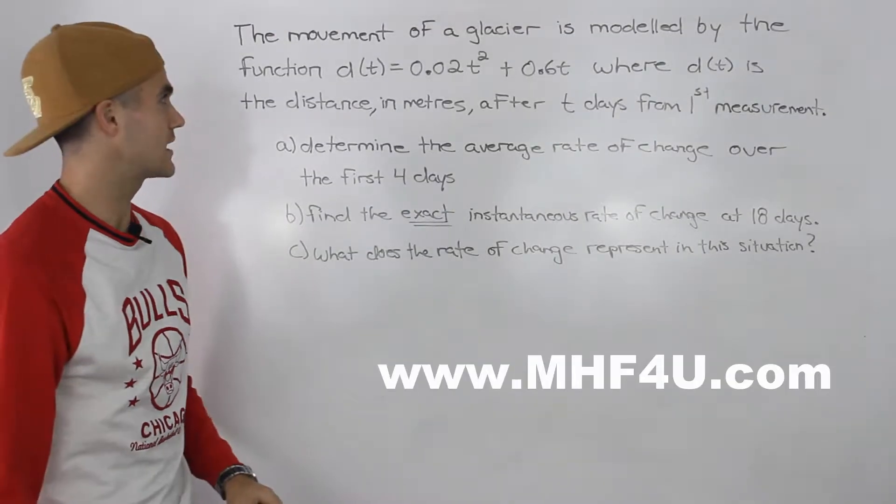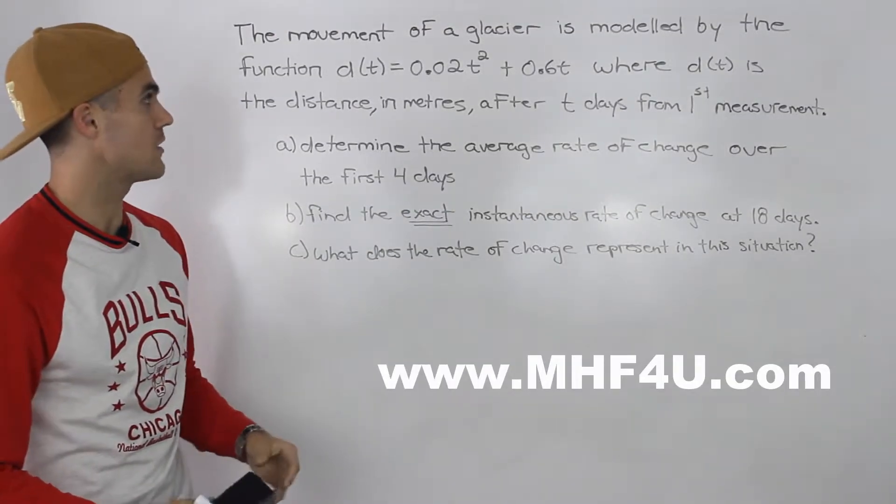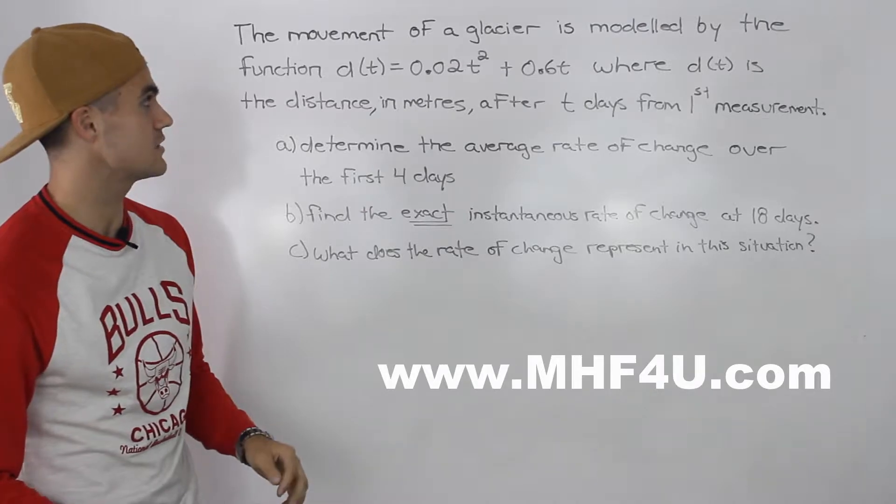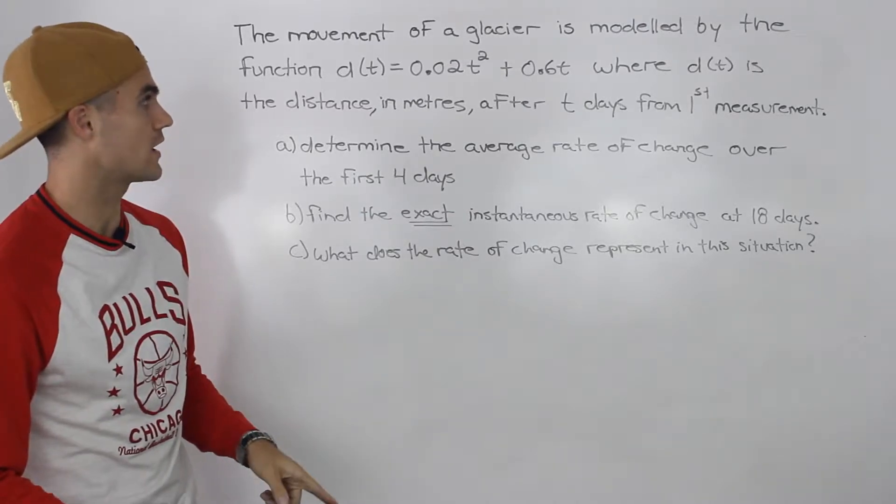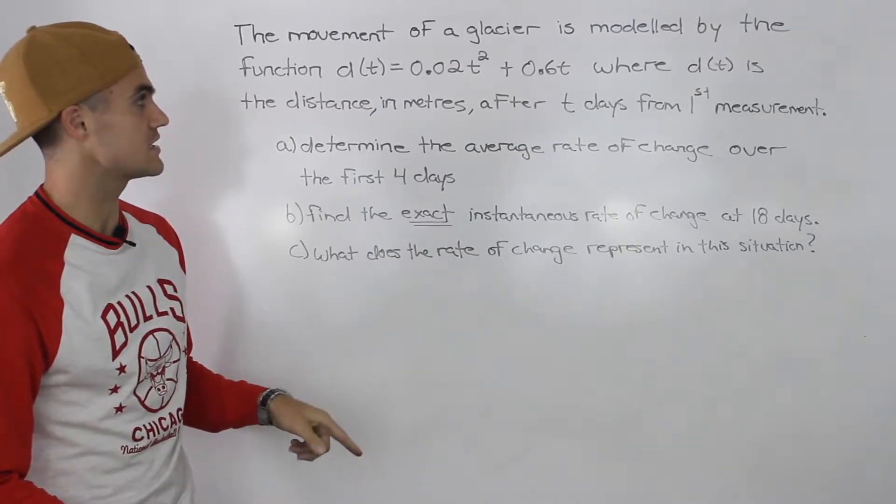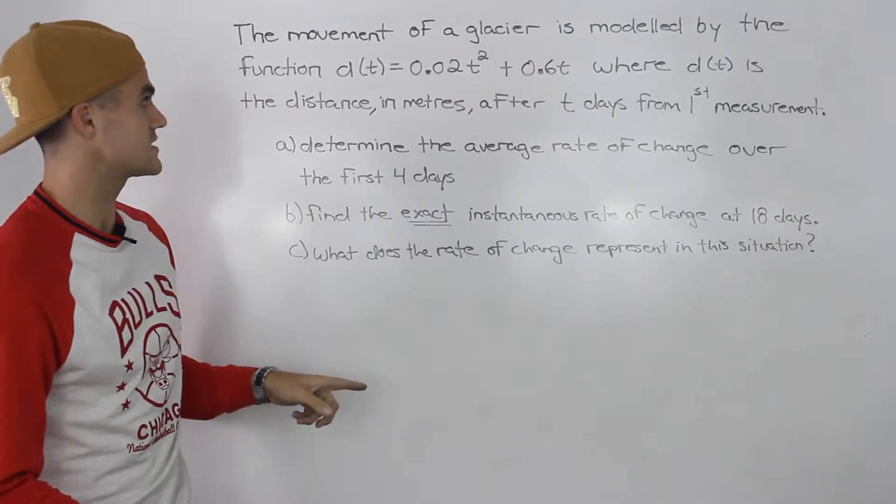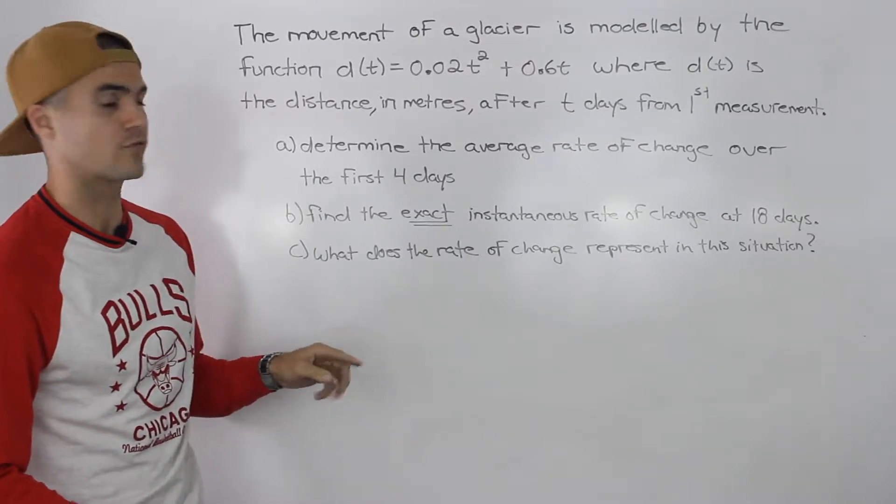Welcome back everybody. Moving on to the next question. The movement of a glacier is modeled by the function d(t) = 0.02t² + 0.6t, where d(t) is the distance in meters after t days from first measurement.